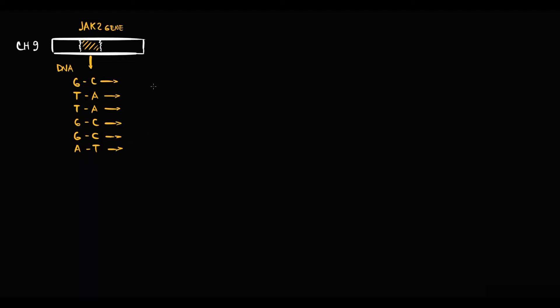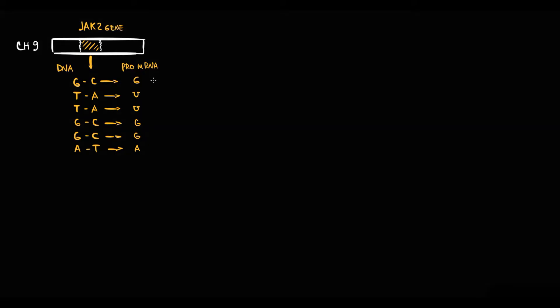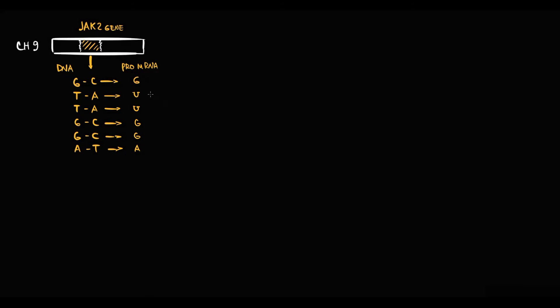For this purpose, the DNA molecule makes a copy of the gene in the form of a pre-mRNA molecule. This process is called transcription, and it results in production of a pre-mRNA molecule. Let's suppose that our sequence of nucleotides is located in a coding region called an exon, so this sequence will not be removed by RNA splicing and in the form of a mature mRNA molecule will be delivered to ribosomes.